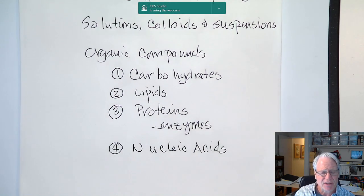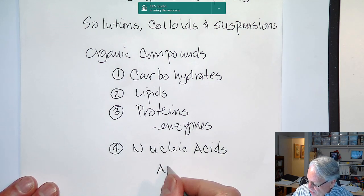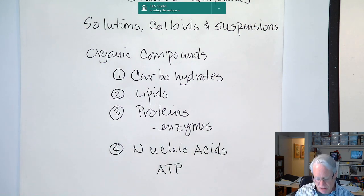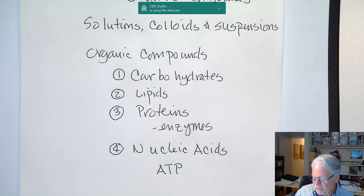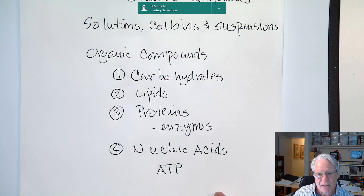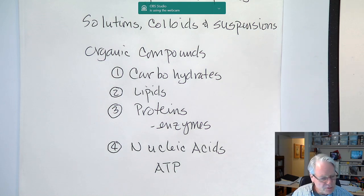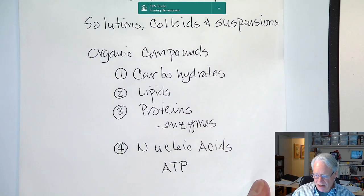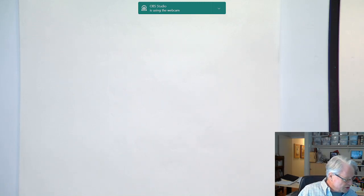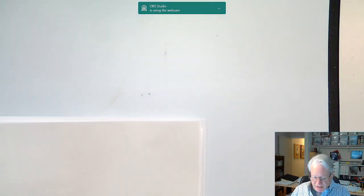When we talk about proteins, we're going to include a discussion on a particular type of protein referred to as an enzyme. Enzymes are going to play an extremely important role in your body, and you'll be looking at a variety of different enzymes in 40B and 40C. The fourth organic compound is nucleic acids — DNA and RNA — and we'll also bring in a discussion on ATP, a molecule you'll hear quite a bit about.